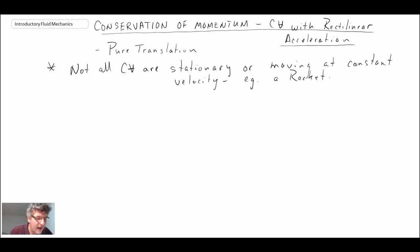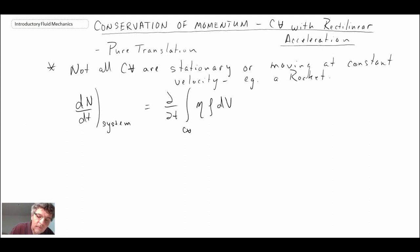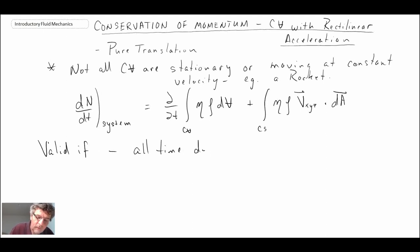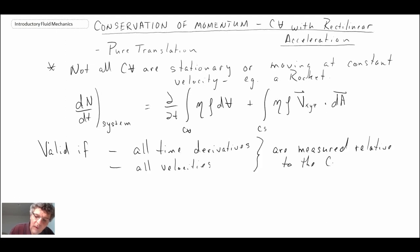If you look back, what we had was the equation for our extensive property that relates a systems-based approach to the governing equations to a control volume. And if you recall from the last section that we looked at, for cases of linear acceleration, we said that as long as you measure the velocities relative to the control volume, you're okay — that's where we had constant velocity of the control volume.